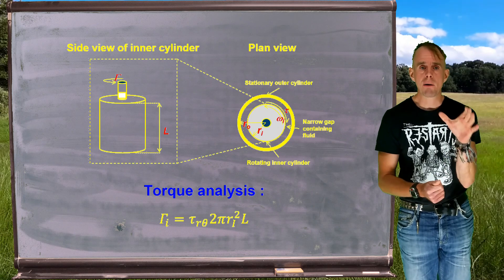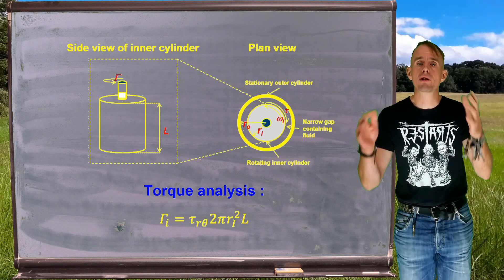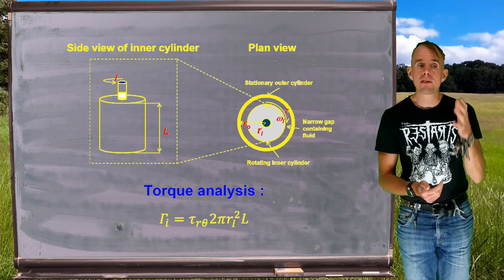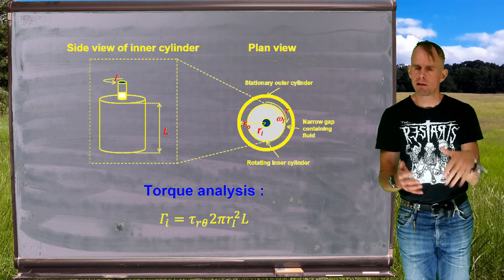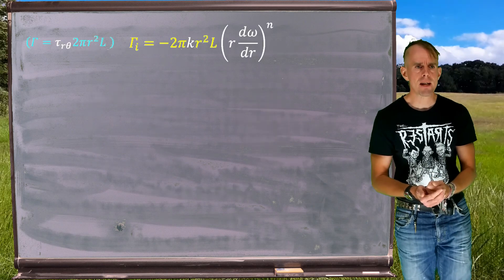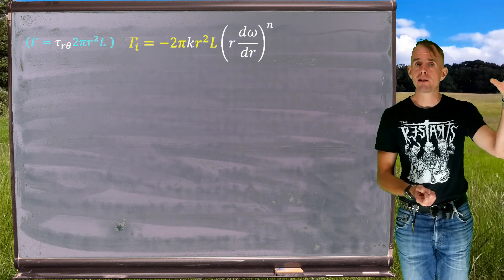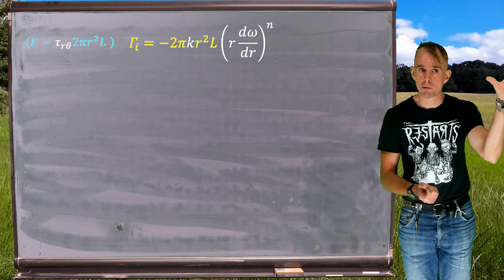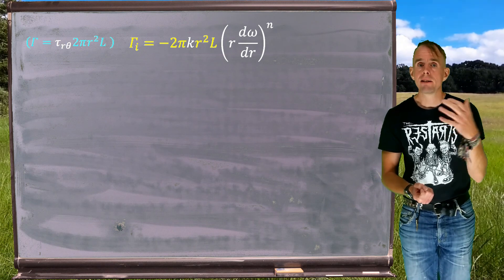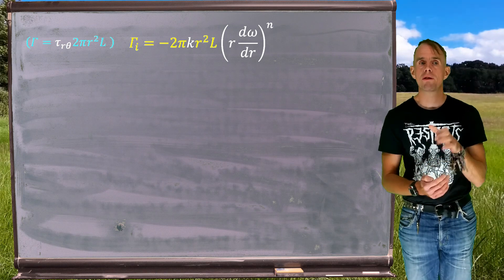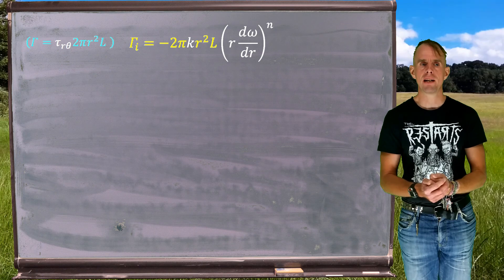And if you recall, for our Newtonian analysis, we said that τ_rθ is a function of our deformation, our velocity gradients. And then that gave us something to integrate. So we're going to do the same again. So here on the blackboard now, top left in blue and in white is a reminder of that torque expression.